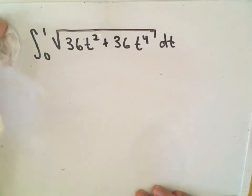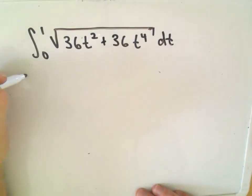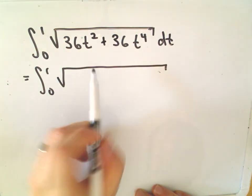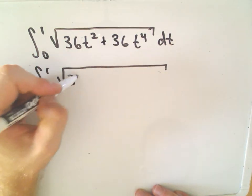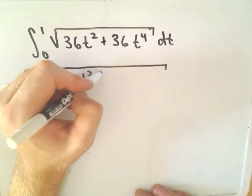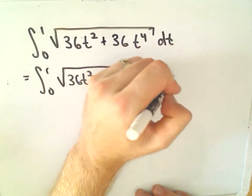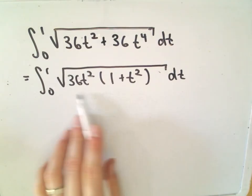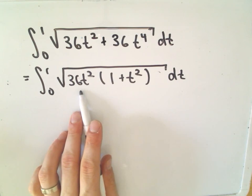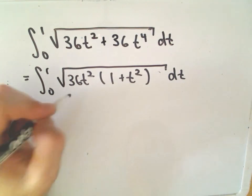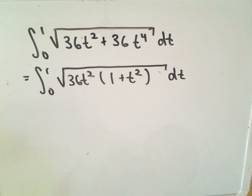And now what I'm going to do is simply factor out or I'm going to factor 36t squared from underneath the radical, and that would leave me 1 plus t squared left over underneath as well. And now, okay, I've got a product so I can factor things out. Well I'm going to pull out this 36t squared.